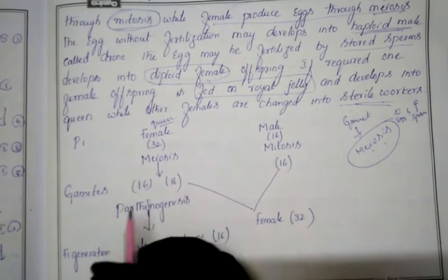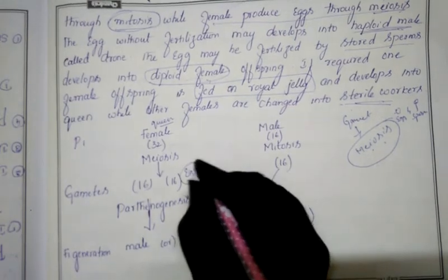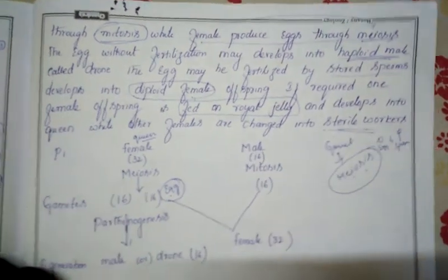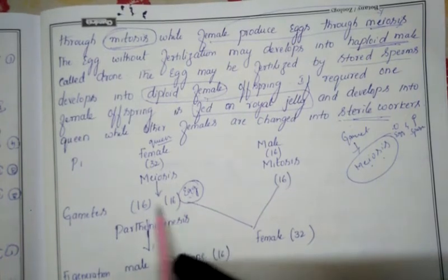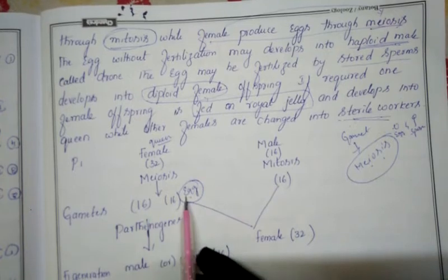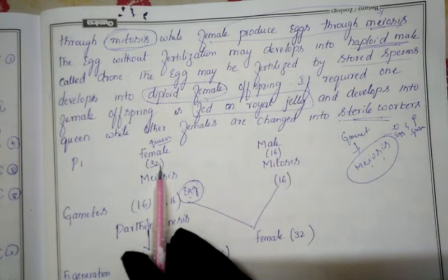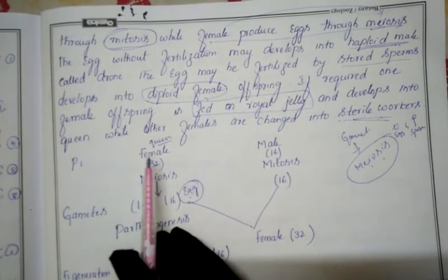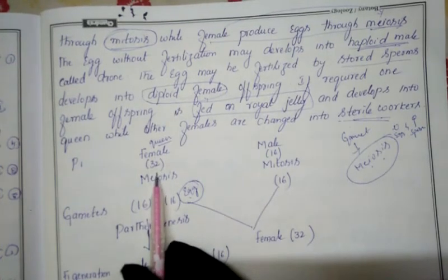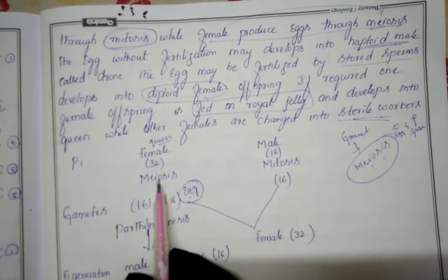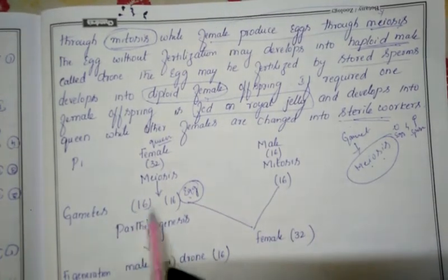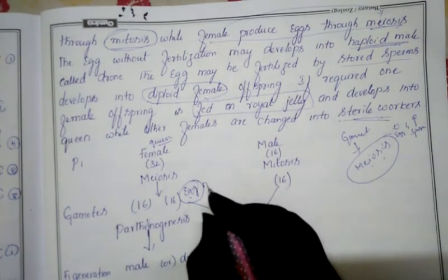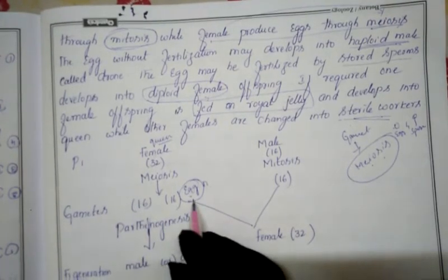The queen (female) produces eggs through meiosis. The queen has 32 chromosomes; meiosis produces eggs with 16 chromosomes (haploid). Some eggs undergo parthenogenesis — they are not fertilized by sperm — and develop directly into haploid male drones with 16 chromosomes.